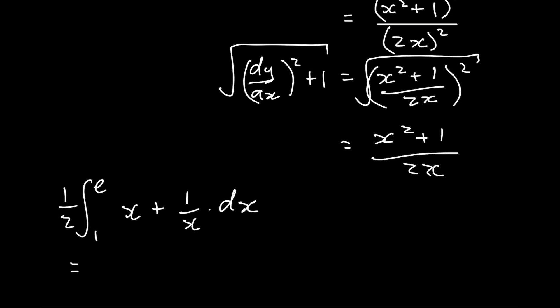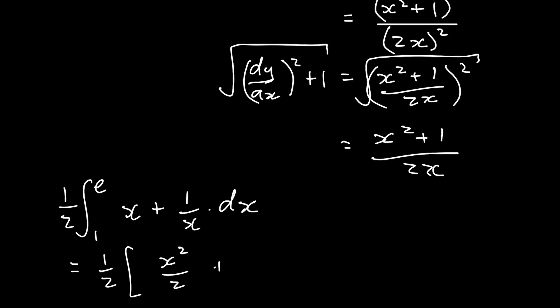And what we're left with is 1 over 2 times the integral from 1 to e of x plus 1 over x. This solved is 1 over 2 times — the integral of x is x² over 2, and the integral of 1 over x is the natural log of x — from 1 to e.